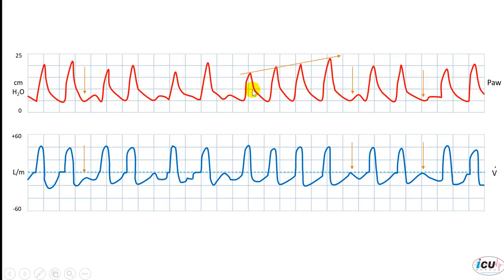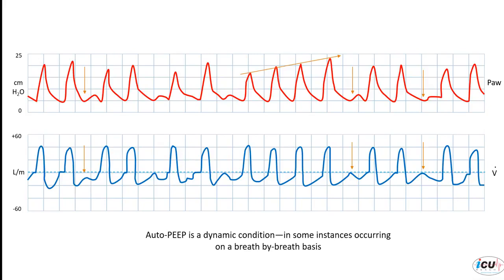This is occurring because of tachypnea — you can see how fast the patient is breathing. Because of the fast breathing, the patient did not have enough time to exhale all the way to the baseline, so dynamic hyperinflation built up and auto-PEEP formed. The next breath, when the patient started to make an effort, was ineffective. Auto-PEEP is a dynamic condition; in some instances it occurs on a breath-to-breath basis and doesn't have to be occurring at all times. If we have an area where exhalation is prolonged, the patient will be able to exhale all the way to zero before the next breath, and then we do not have dynamic hyperinflation in the next breath.